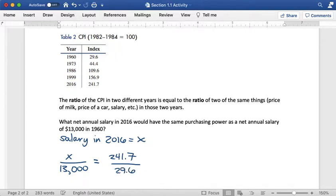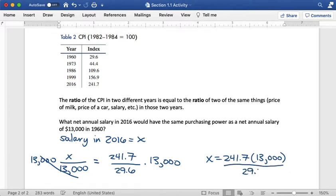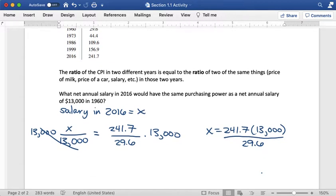So this is an equation that I want to solve for X. So in order to do that, there's a few different ways you can think about it. I like to think about multiplying both sides by 13,000 to get rid of that 13,000 in the denominator there. So I know that X equals 241.7 times 13,000 divided by 29.6. And if I do that on my calculator, I get that X equals $106,152.03.